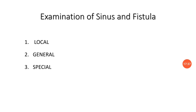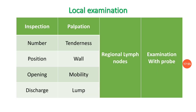Examination of sinus and fistula is done under three sub-headings: local examination, general examination, and special examinations. In local examination, we examine the local part about which the patient has come with the complaint. In inspection, we deal with number, position, opening, and discharge.